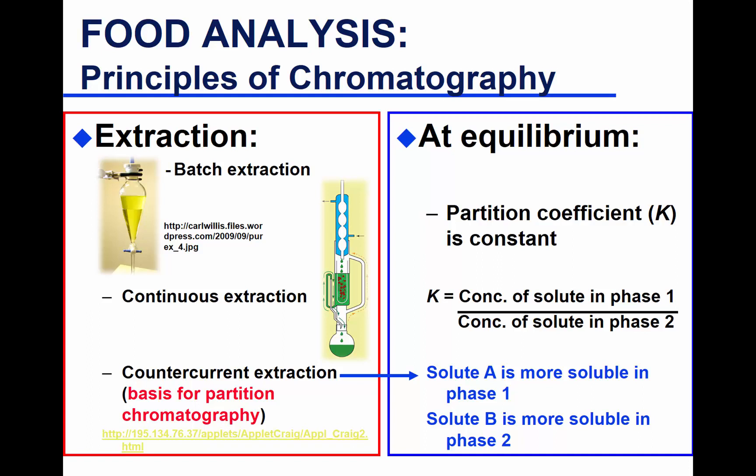Extraction can be batch or continuous. In batch extraction, you use a separatory funnel with two immiscible phases — say water and hexane — shake, let it settle, and separate the phases. Continuous or semi-continuous extraction — you'll learn this in fat extraction with the Soxhlet apparatus. You have a solvent, evaporate it, the solvent vapor goes up and gets condensed over the sample, solubilizes your fat, and siphons back into the container, so you end up with fat and solvent together.